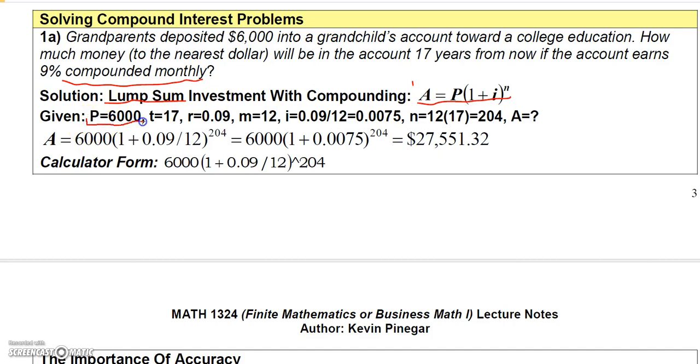I'm given that they deposited $6,000, so P equals 6,000. They did this for 17 years. The money earns an annual interest rate of 9%, or 0.09. Since money is compounded monthly, m is 12, so i would be 0.09 divided by 12, which is 0.0075. Since t is 17 years, n equals 12 times 17, or 204 periods.